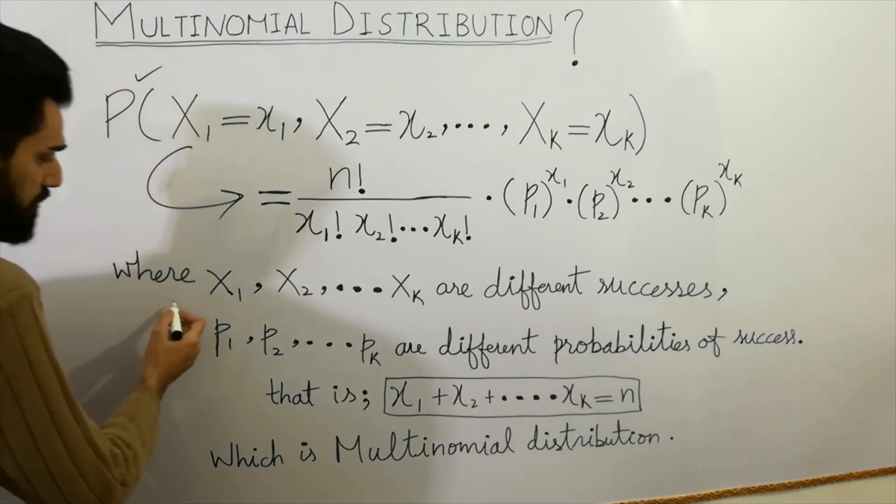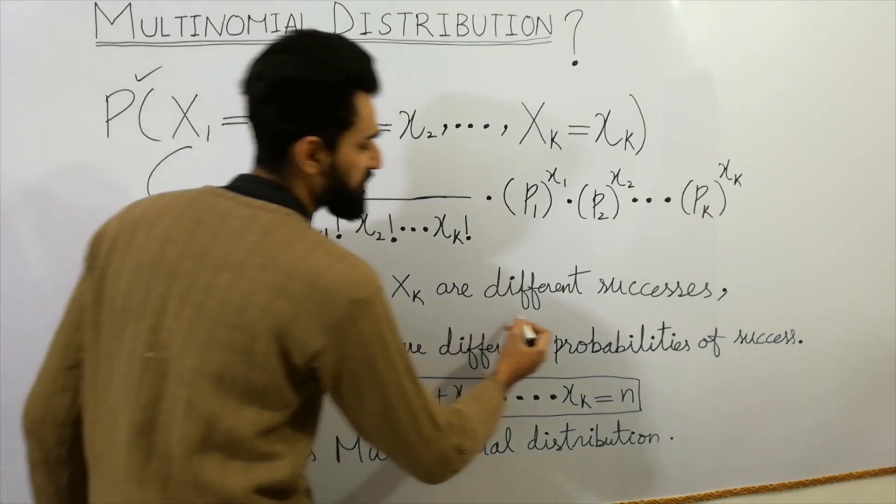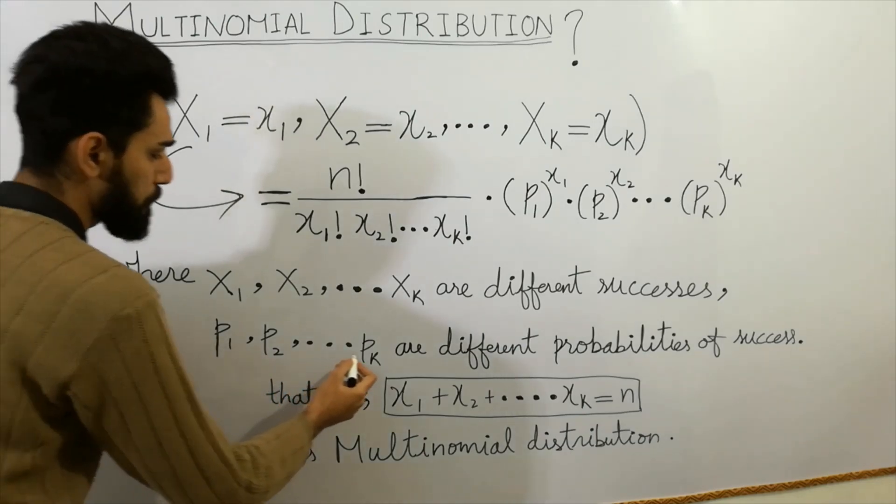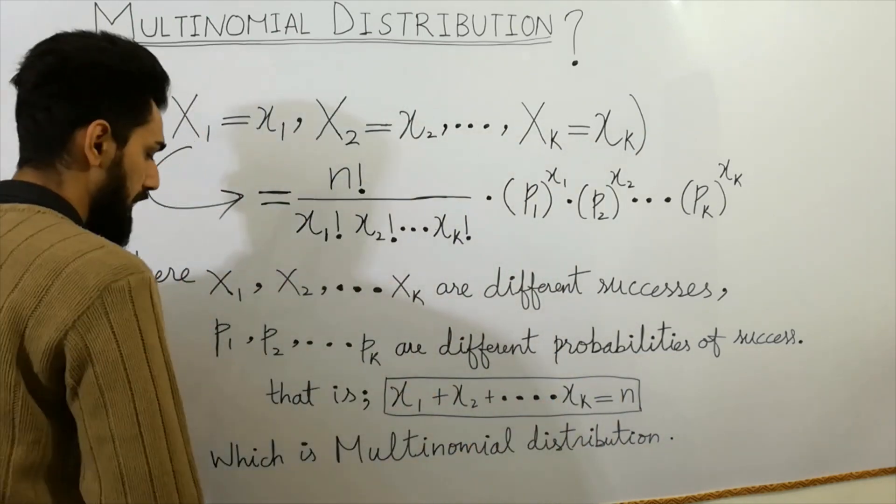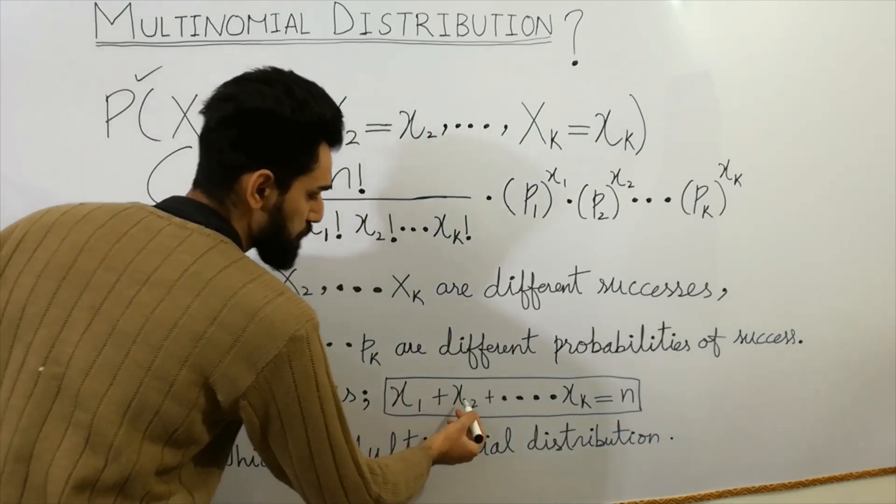Next, where capital X1, capital X2, capital Xk are different successes. Capital Xk are different successes, and p1, p2, up to so on pk are different probabilities of success. And the last that is summation of small x1 plus small x2 plus small xk is always equal to n.